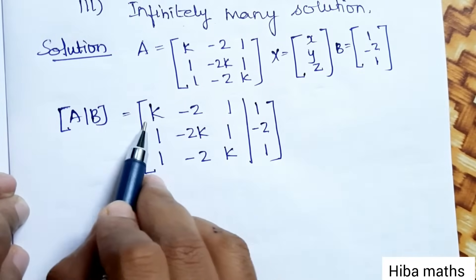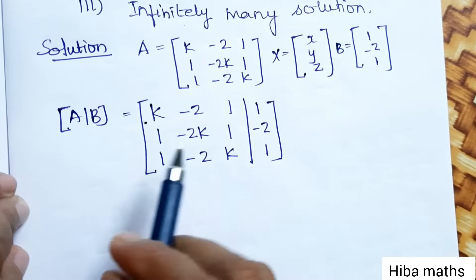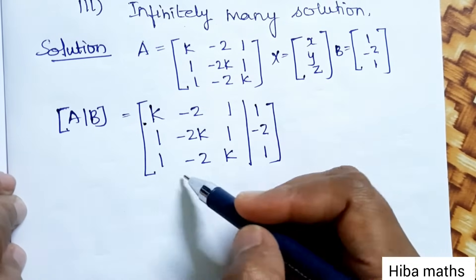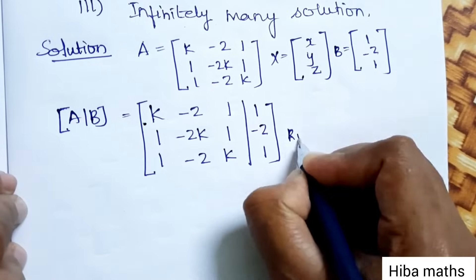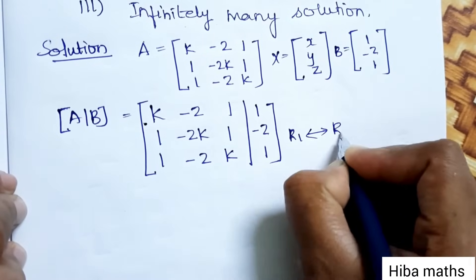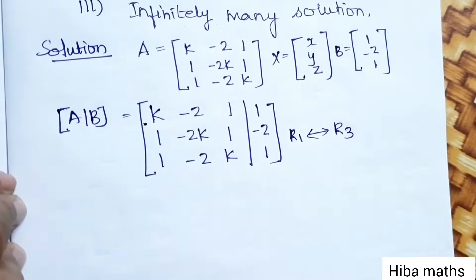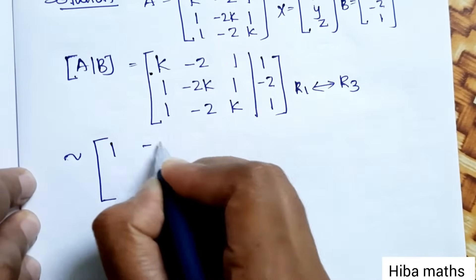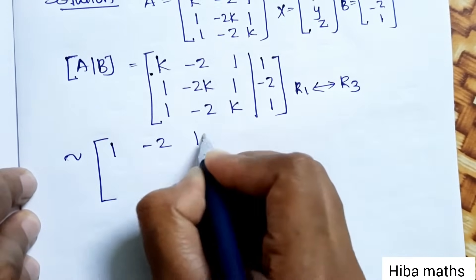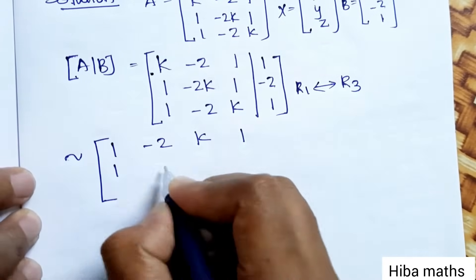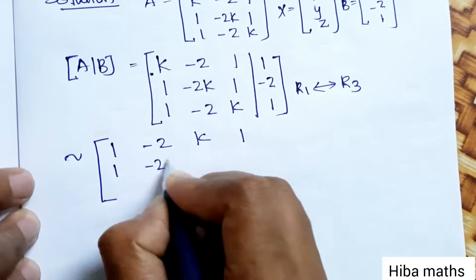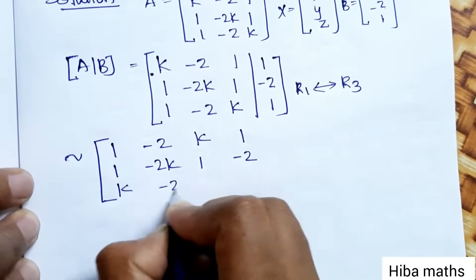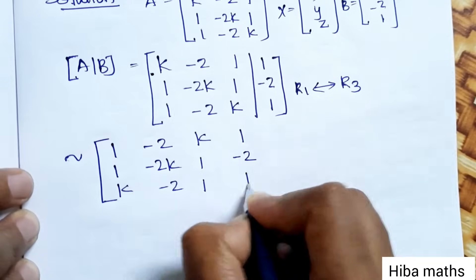Now, in the first row first column there is 1, so we interchange Row 1 and Row 3. After R1 ↔ R3, the matrix becomes: Row 1: 1, -2, k, 1; Row 2: 1, -2k, 1, -2; Row 3: k, -2, 1, 1.